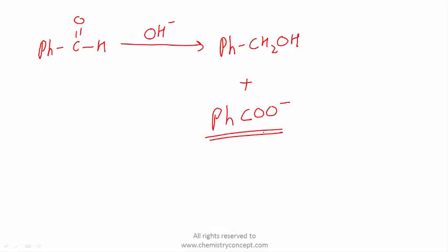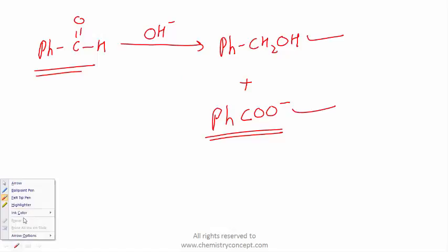If it is sodium hydroxide, we get sodium salt of carboxylic acid, and if it is potassium hydroxide, we get potassium salt of carboxylic acid. So basically we get two compounds: one is an alcohol, second is a salt of carboxylic acid. Now let's have a look at the mechanism.